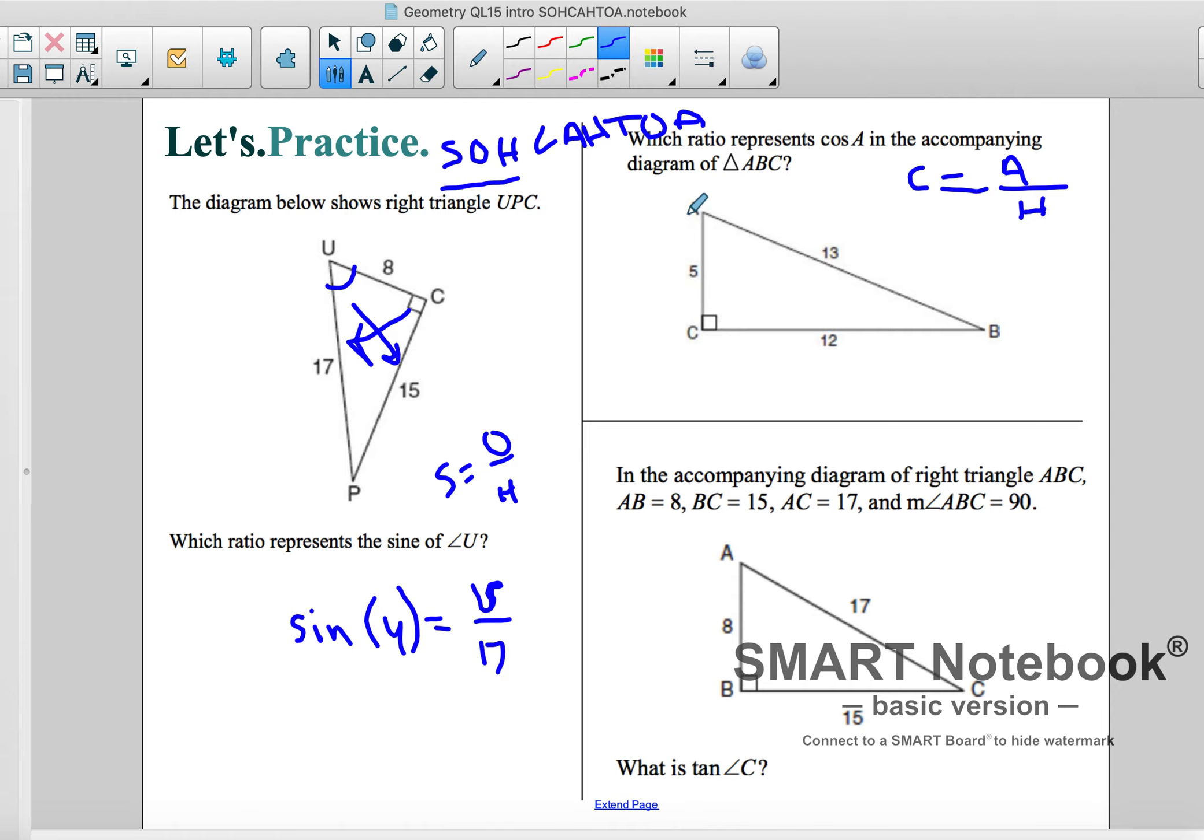Cosine of A, well, I'm looking at A. What's adjacent? 5. That's next to it. So I've got 5 over my hypotenuse is 13. So cosine of A is equal to 5 over 13.